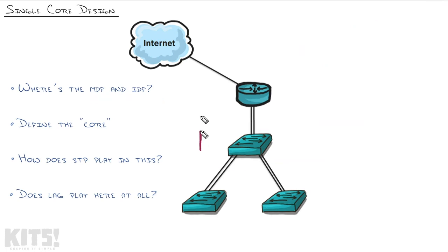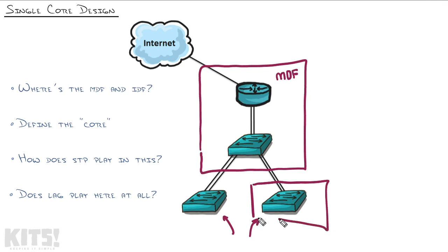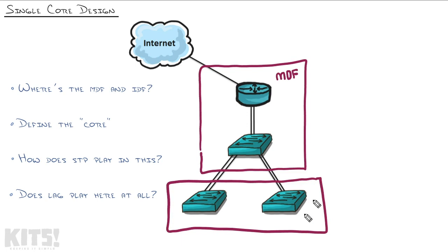I would suggest that this would be the MDF and these switches down here would be in the IDF. Now depending on the building, it might be two different IDFs - IDF1 on the left, IDF2 on the right. Or in the case of the office that we're working with right now, both of these switches could be in the same IDF.